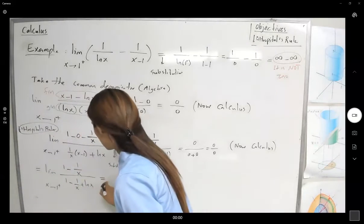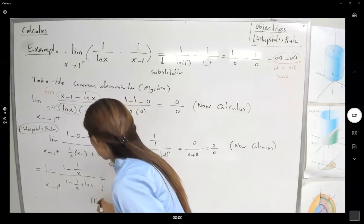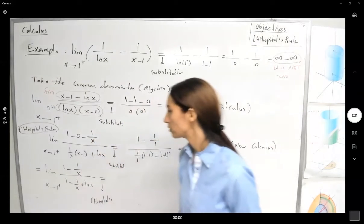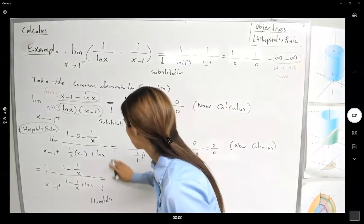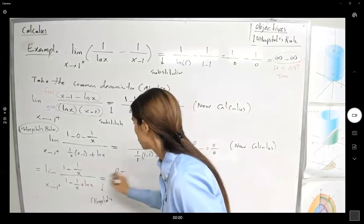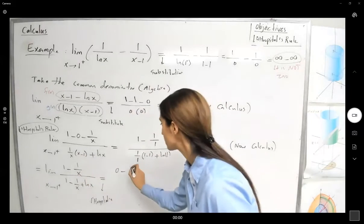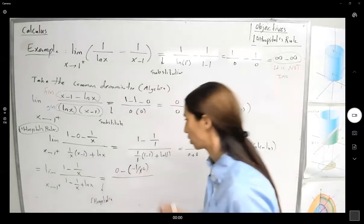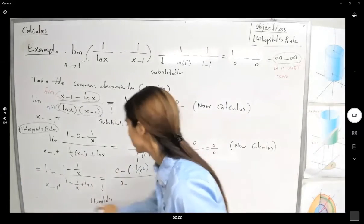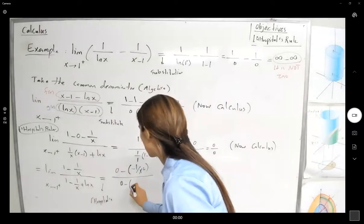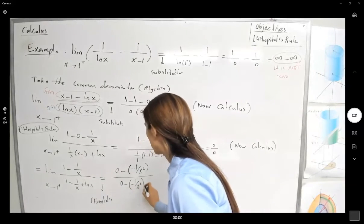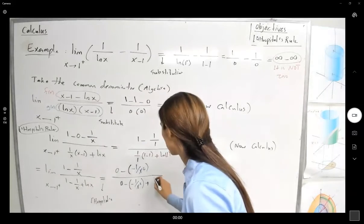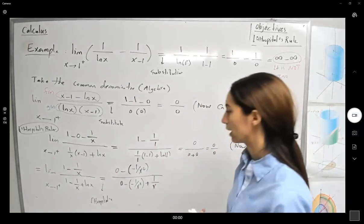So L'Hopital's rule. The derivative of 1 is 0. The derivative of negative 1 over x is negative 1 over x squared divided by, the derivative of 1, 0 minus 1 over x is negative 1 over x squared. I'm sorry, plus the derivative of ln is 1 over x.